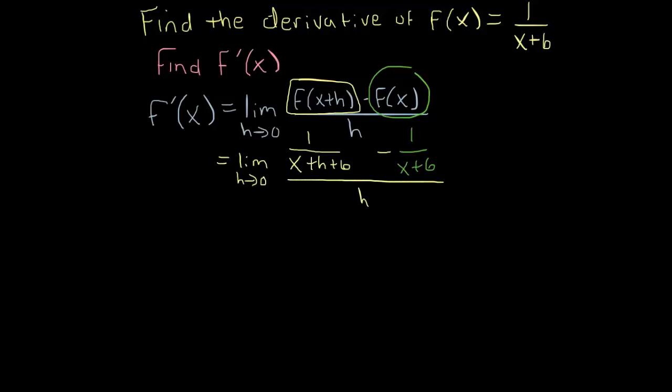So at this point, we have to note you can't plug in 0 for h, and you never will be able to using this definition. So we need that h to cancel. And getting that h to cancel amounts to simplifying the numerator here so that in its simplified form that h will be able to cancel.